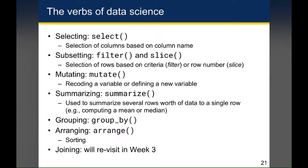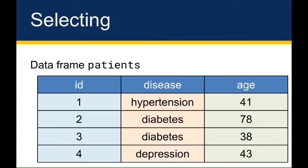Joining is another verb that we'll get into in week three, but we won't cover it today. Joining basically involves taking two data sets and merging them based on certain identifiers that are in each of the data sets. For these examples, we'll start with a data frame called patients, and we'll run different operations on it to try to answer different analytical questions.